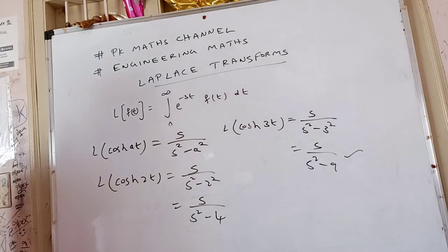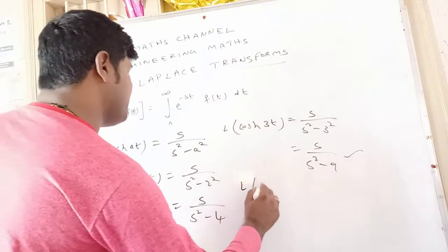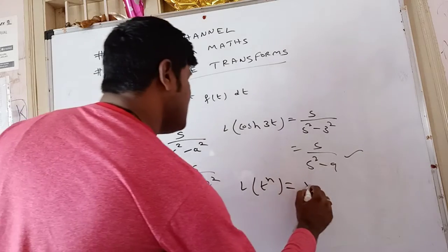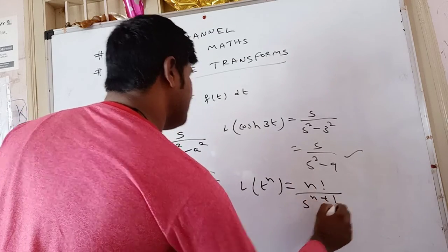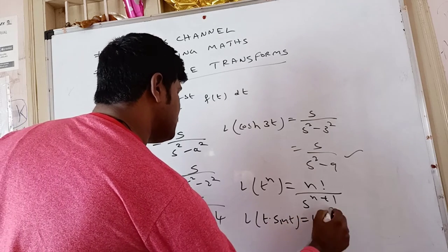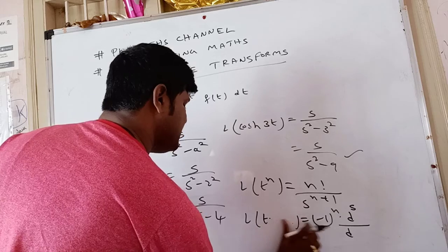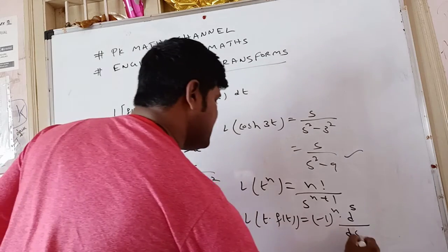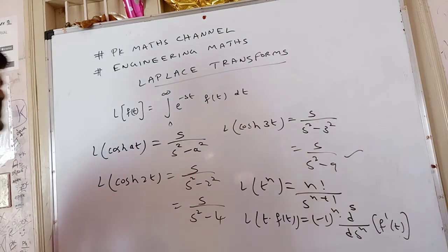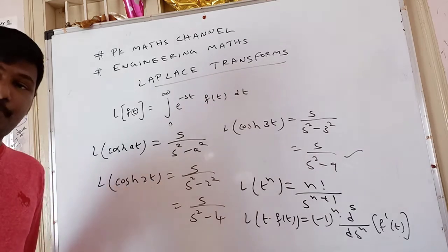Still more — the last formula in Laplace you need to remember: L{t^n} = n! / s^(n+1). Very important formula. There is also the formula for L{t·f(t)}: it involves (−1)^n · d^n/ds^n of L{f(t)}. These are all the formulas you need to remember before solving Laplace transformation problems.